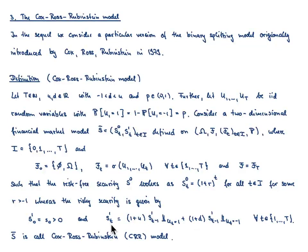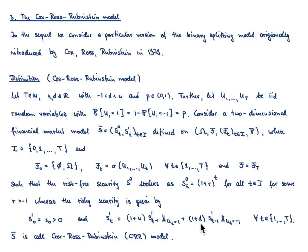So at any time point T, the values this process S_T can take are either (1 + U) · S(T−1) or (1 + D) · S(T−1). Jumping up or down should not be taken literally, because in case D is positive, in both cases the process will jump up. It will only jump down if D is negative, but it could also be that U is negative — these cases are also allowed. This model is then called the Cox-Ross-Rubinstein model, or sometimes abbreviated as the CRR model.